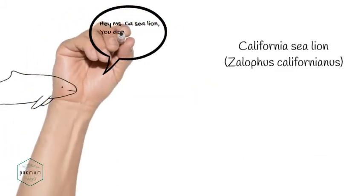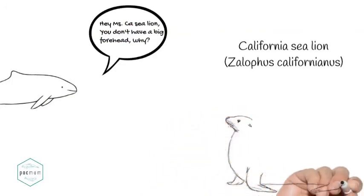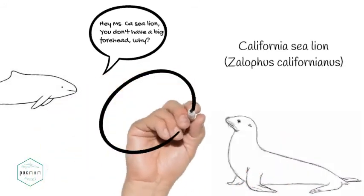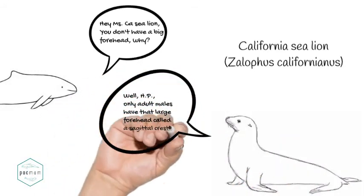The California sea lion is a darker brown eared seal, measuring up to 7 and a half feet, weighing up to 700 pounds, and living 20 to 30 years. They are very vocal, sounding like barking dogs. They are commonly seen near shore, on beaches, docks, buoys, and jetties.